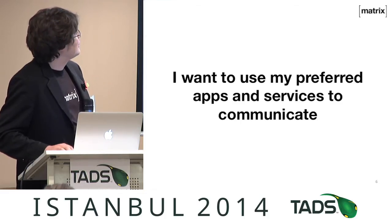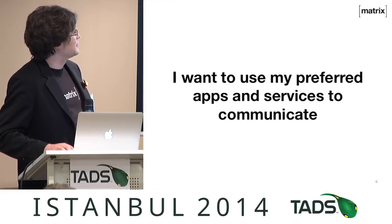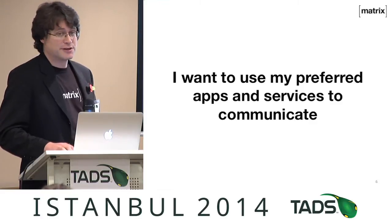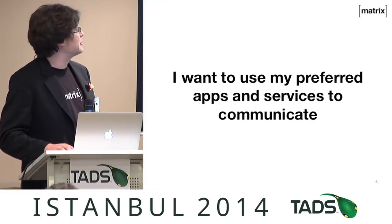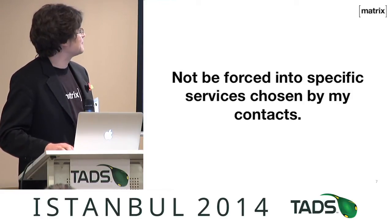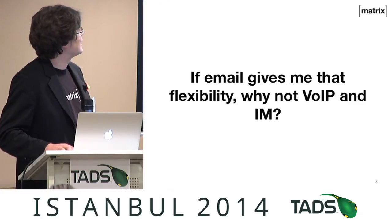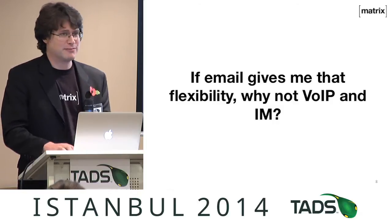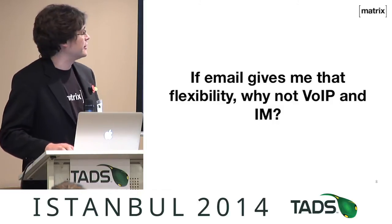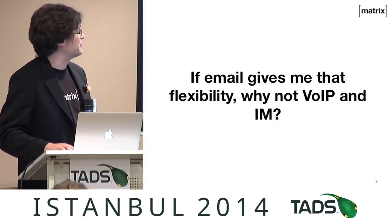It's like some crazy world where, if I was on email, I had to go and register with Gmail just to send somebody an email on Gmail, because they're all doing the same thing at the lowest common denominator. There is no good way to defragment them currently. I obviously want to use the preferred app and services that I want — I don't want to be forced into it by my contacts. If email lets me do this, why on earth doesn't VoIP and instant messaging?